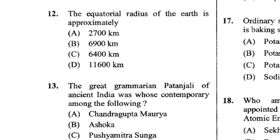Question 12: The equatorial radius of the Earth is approximately 6,400 kilometres. C is the answer.